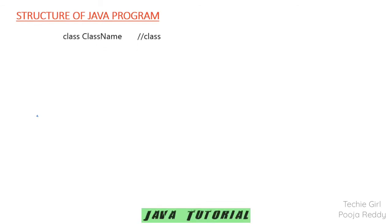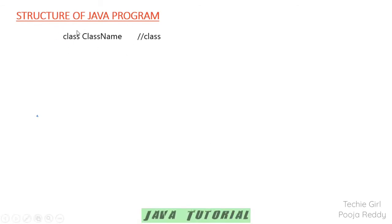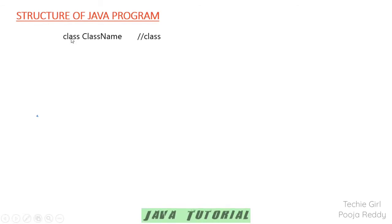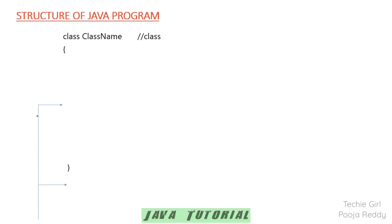A Java program will always start with the class keyword followed by a class name. Here, 'class' is a keyword and it should always be in small letters, while its name should always start with a capital letter. It is mandatory to start your Java program with the class keyword followed by the class name, and it will have a scope enclosed with flower braces.